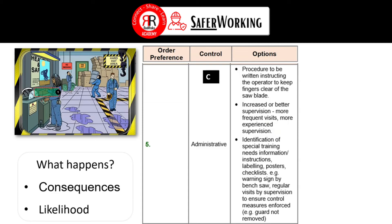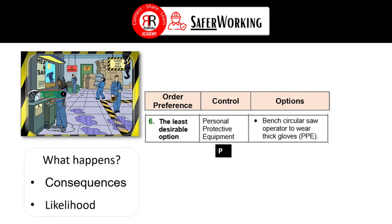The administrative part is where some people tend to focus quite a lot, but my specific objective is to go higher up the chain — elimination, reduction, isolation — before reaching the least desirable option, which is PPE. The bench circular saw operator could wear thick gloves as PPE. If working for a company, I would always recommend going higher up in terms of risk reduction.